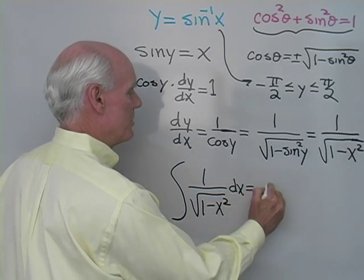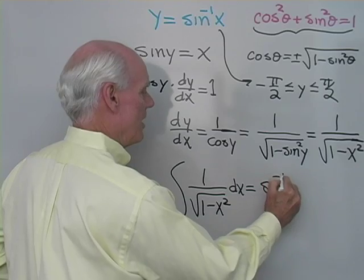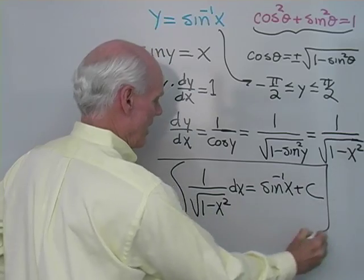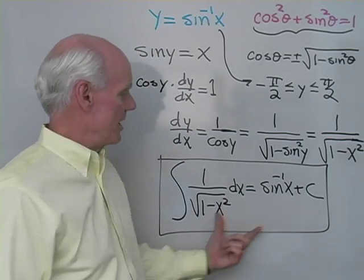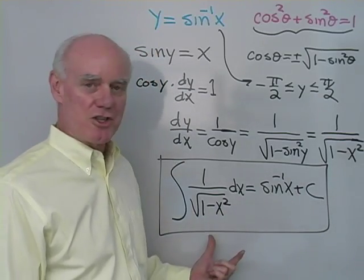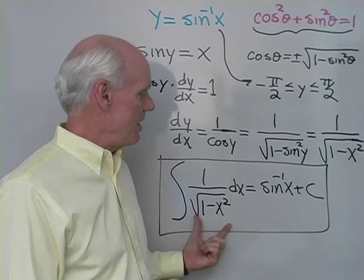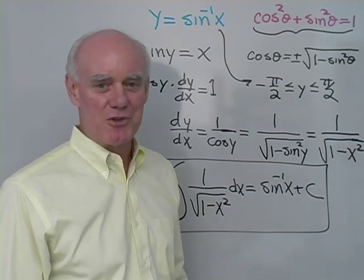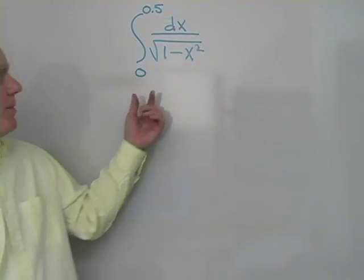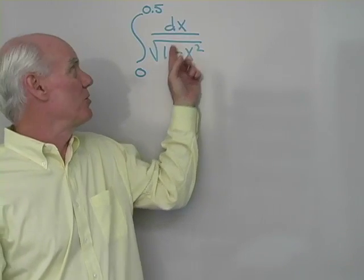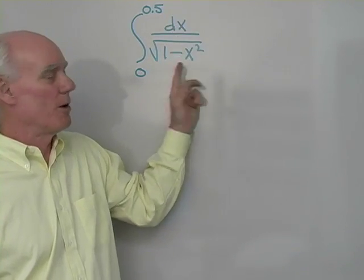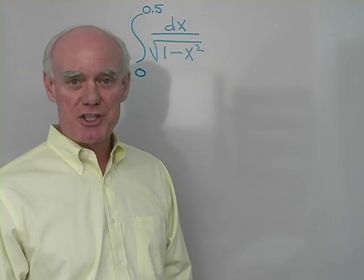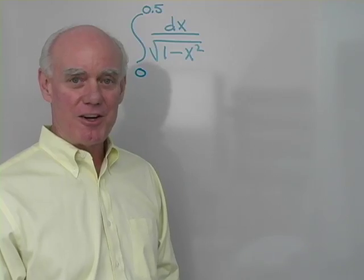So dy dx equals 1 over square root of 1 minus x squared when y equals inverse sine x. That means the integral of dx over square root of 1 minus x squared equals inverse sine x plus c. This is another formula giving a relationship between an algebraic function and an inverse trig function. Let's use it with a definite integral from 0 to 0.5 of dx over square root of 1 minus x squared.